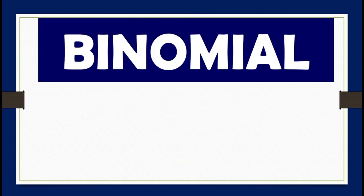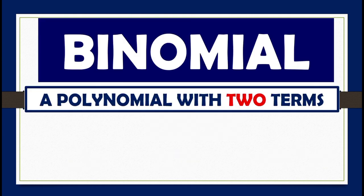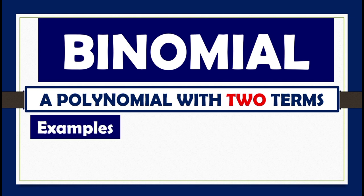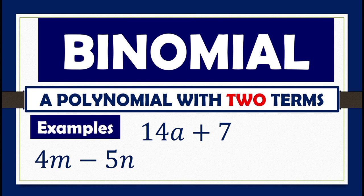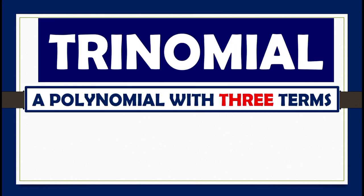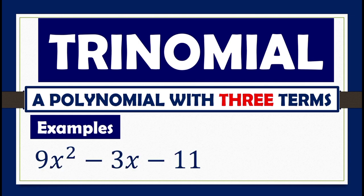A binomial is defined as a polynomial with two terms. Examples are: 4m minus 5n, 14a plus 7, negative 3x to the fourth minus yz. While a trinomial is defined as a polynomial with three terms. Examples are: 9x squared minus 3x minus 11, and negative 3x to the fourth minus y plus z.